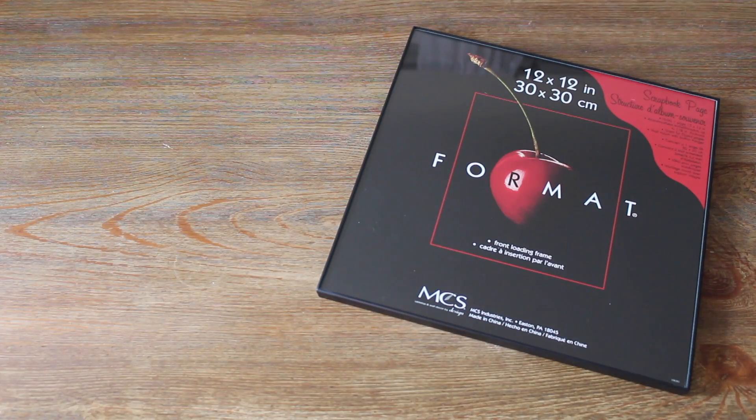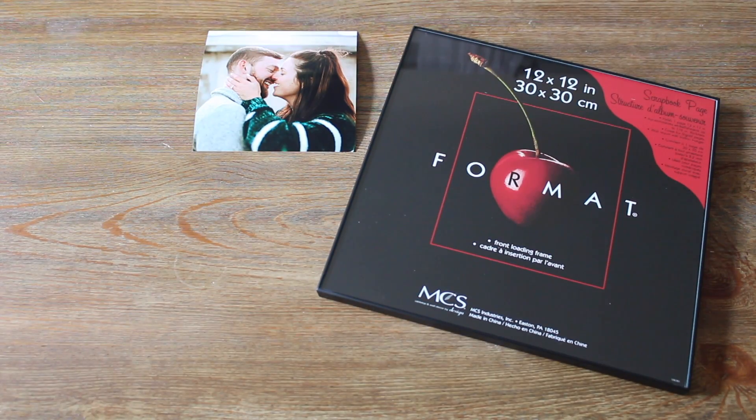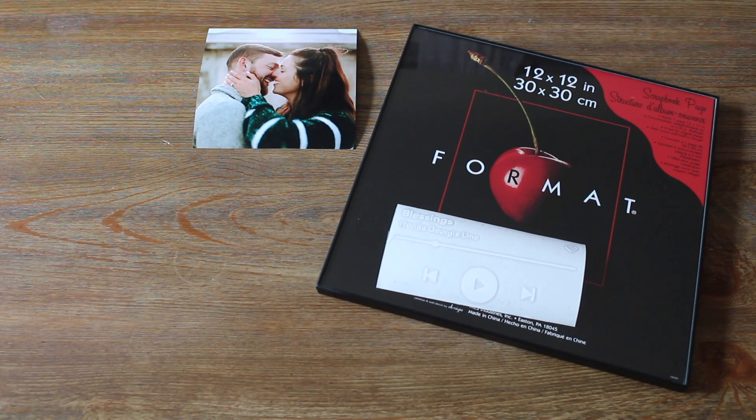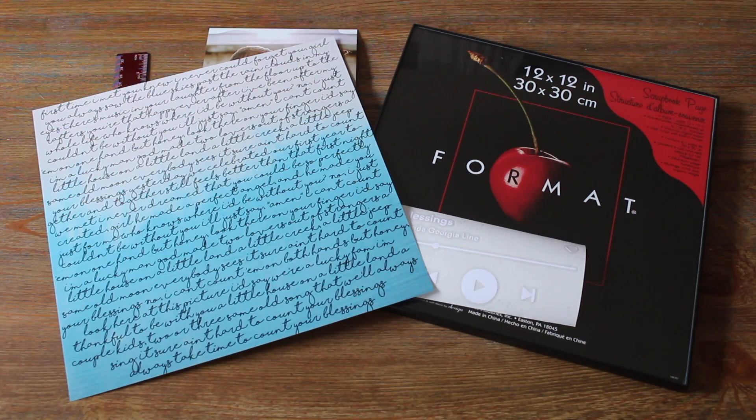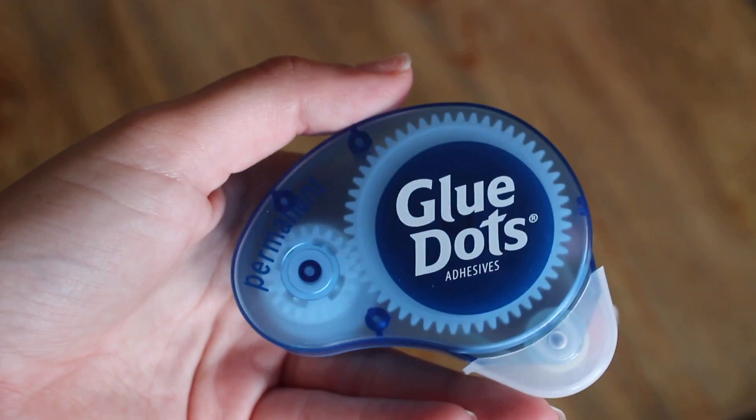For the materials you'll need a 12 by 12 frame, a 6 by 6 photo, a vinyl cut out of the song, a ruler, a dry erase marker, optional paper to put in the background, and some kind of adhesive.